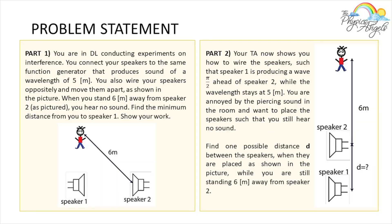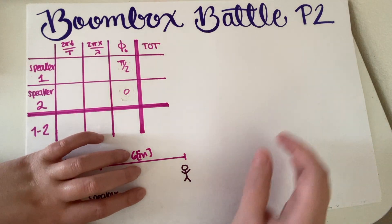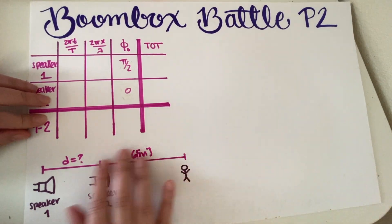Let's go ahead and look at Part B. Your TA now shows you how to wire the speakers such that Speaker 1 is producing a wave that is pi/2 ahead of Speaker 2, while the wavelength stays at 5 meters. You're annoyed by the piercing sound and want to place the speakers so that you still hear no sound. Find one possible distance d between the speakers when placed as shown, while you are still standing 6 meters away from Speaker 2.